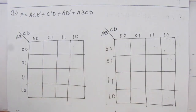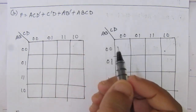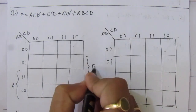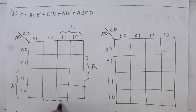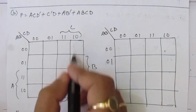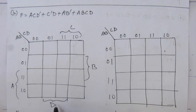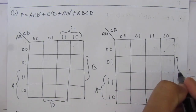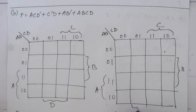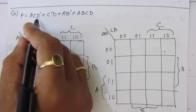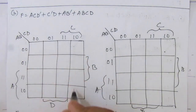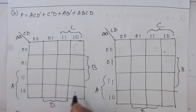Now let us go to the second part of the problem. In the second part we have a four-variable function, so we make a four-variable K-map. Let me first write down the variables: a, b, c, and d. For these two columns, c value is one; for the second and third column, d value is one; for the third and fourth row, a value is one; and for the second and third row, b value is one. The first term is a c d-bar. c d-bar means the fourth column, and a is these two rows, so we put here one and one.